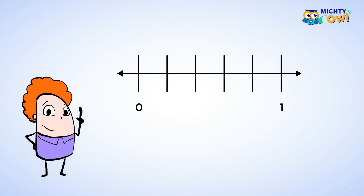Here we have another number line, and it's been split up into 5 equal parts, and that means each section is 1 fifth. So this would be 1 fifth. Moving over one section would make this 2 fifths. And we can continue on like that — this would be 3 fifths and 4 fifths. And finally we have 5 fifths, which is also one whole.